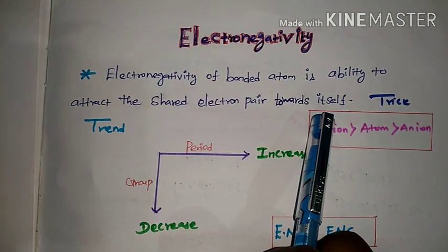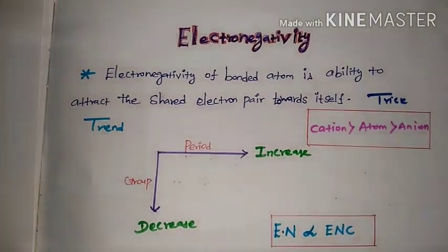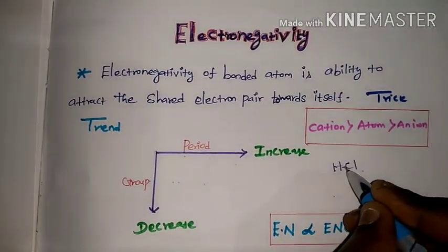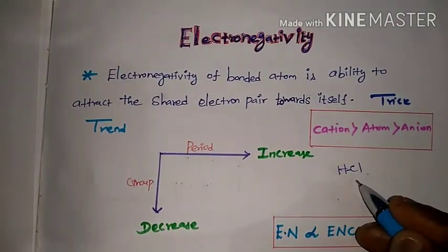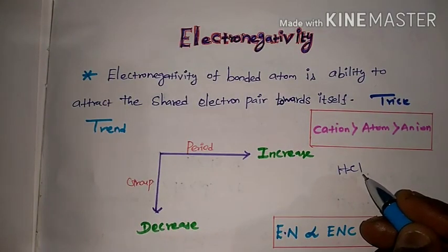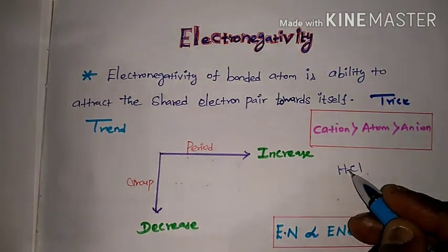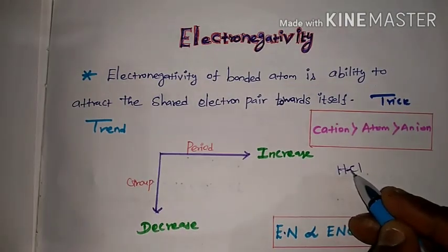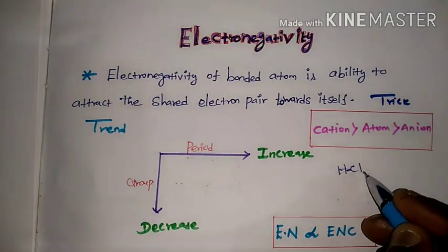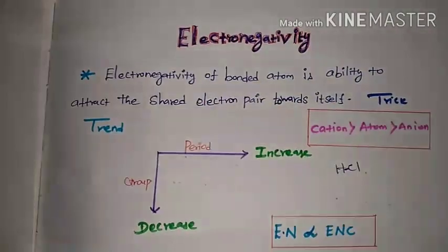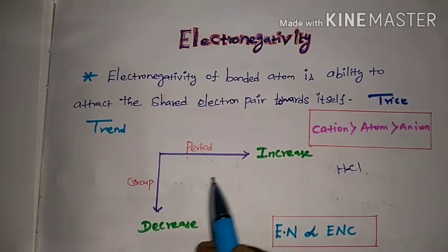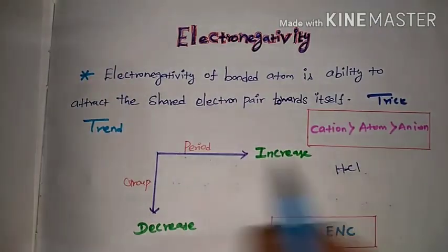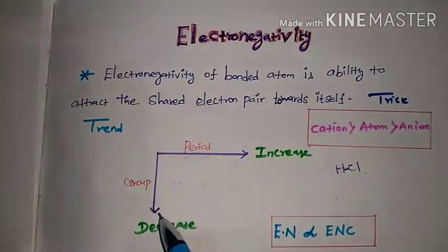That is electronegativity. I am going to show you the trend. In the periodic table, electronegativity is increasing from left to right. From top to bottom in the periodic table, electronegativity is decreasing.